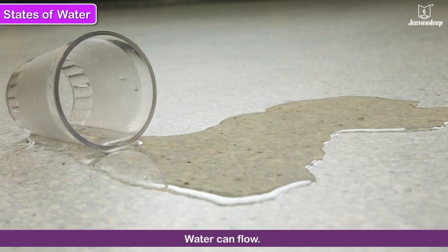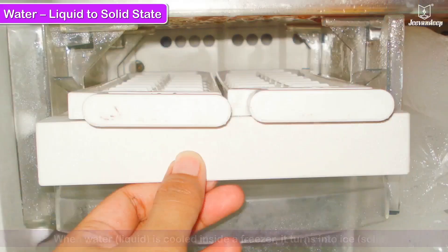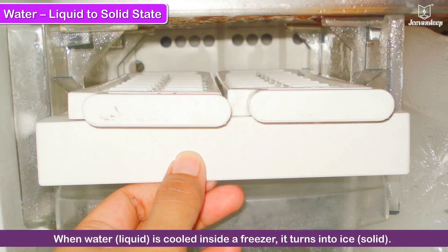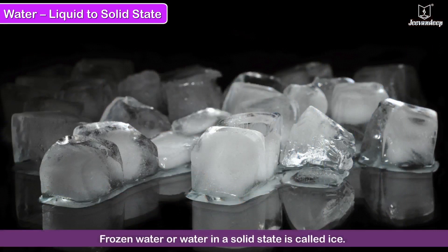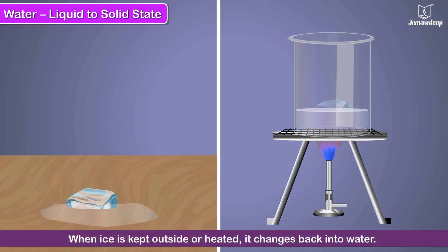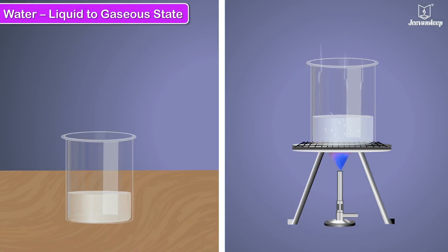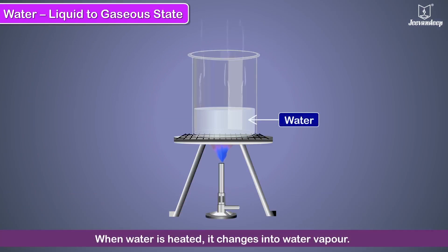Water - liquid to solid state: When water is cooled inside a freezer, it turns into a solid. Frozen water, or water in a solid state, is called ice. Ice has a fixed shape and does not flow. When ice is kept outside or heated, it changes back to water. Water - liquid to gaseous state: When water is heated, it changes into water vapor.